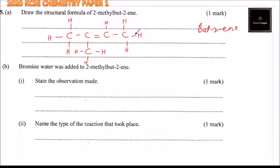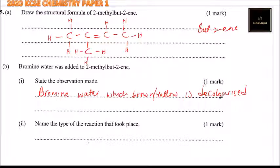From there, we look at part B of the question. Bromine water was added to 2-methylbutane. State the observation made. So when bromine water is added to 2-methylbutane, bromine water is decolorized. So you can say bromine water, which is brown or yellow, is decolorized. That is, it loses the color yellow or brown. So that is how you answer that.